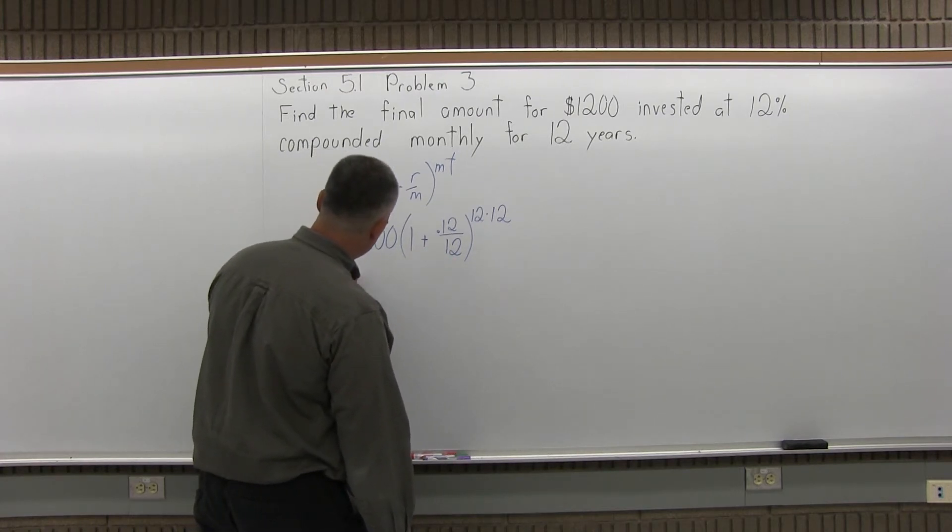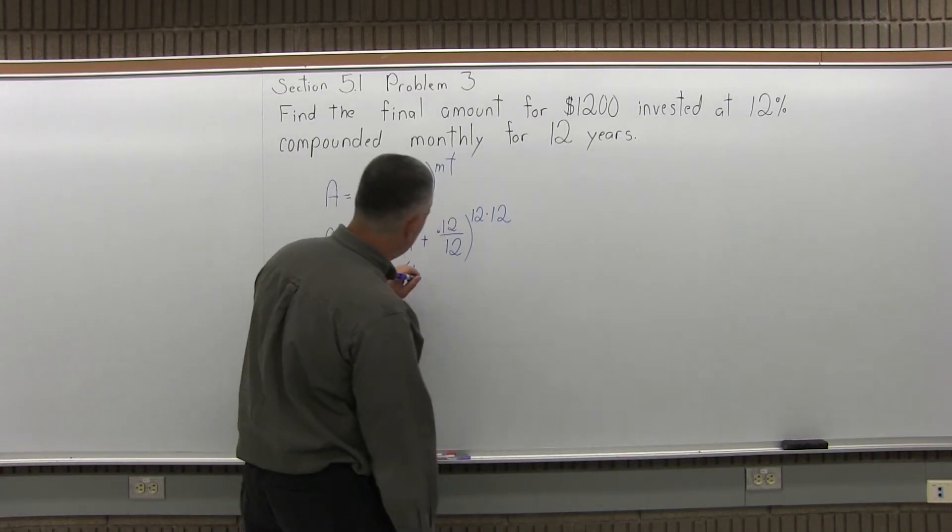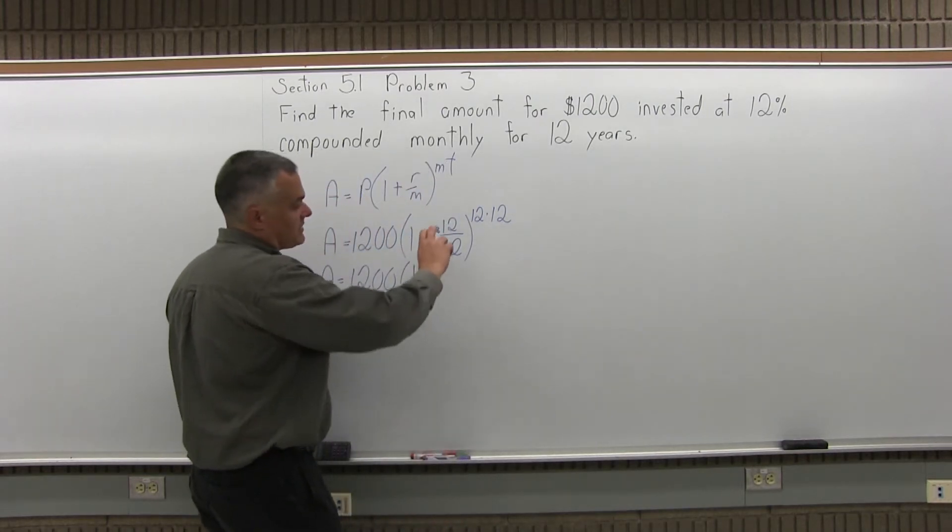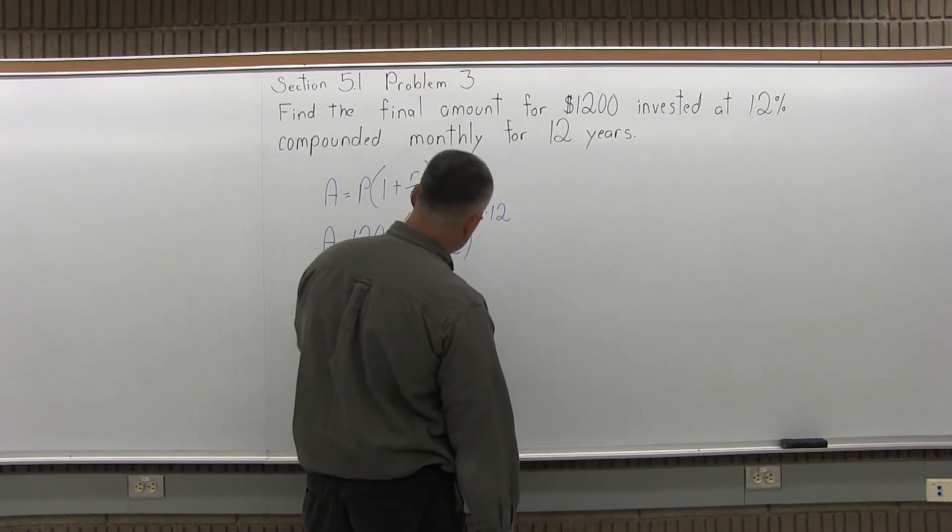So A equals 1200 times 1 plus, now I have a division in my parentheses, .12 divided by 12, that's .01.